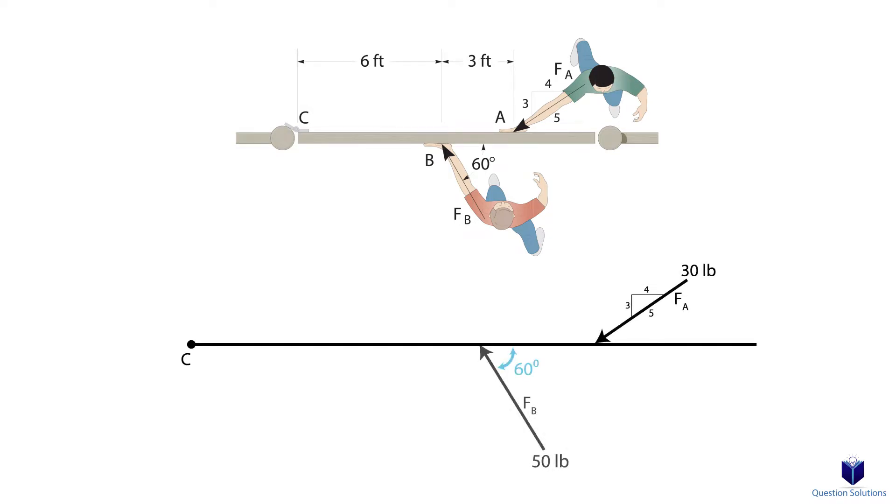Let's first draw a free body diagram. Since we are neglecting the thickness of the gate, we can ignore all the horizontal forces that go through point C, since it won't create a moment.